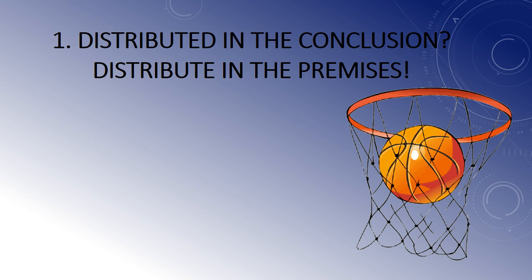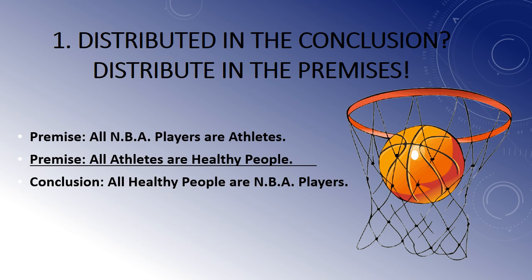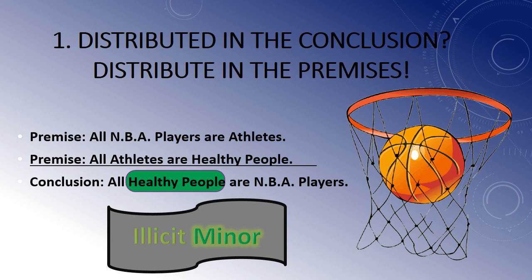Here's a practice example. 'All NBA players are athletes, and all athletes are healthy people — does it follow that all healthy people are NBA players?' The premises look true and the conclusion false, so you should suspect invalidity. A sentences distribute their subjects, and 'healthy people' is distributed in the conclusion. Was it distributed in premise two? It absolutely wasn't. That's the fallacy of illicit minor.